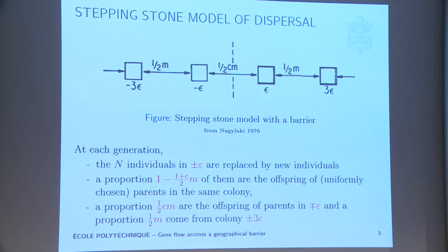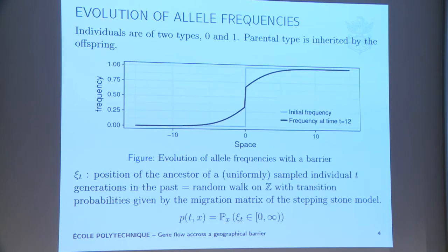I want to know how the genetic composition of this system evolves in time, generation after generation. This is what it looks like. Suppose I have two types in my population, types 0 and 1. Initially, all the types 1 are on the right, and all the types 0 on the left. I let it evolve some generations. The proportion of type 1 in each colony is going to follow this dark line here. You can see that there's a jump in the proportion of type 1 at the interface.